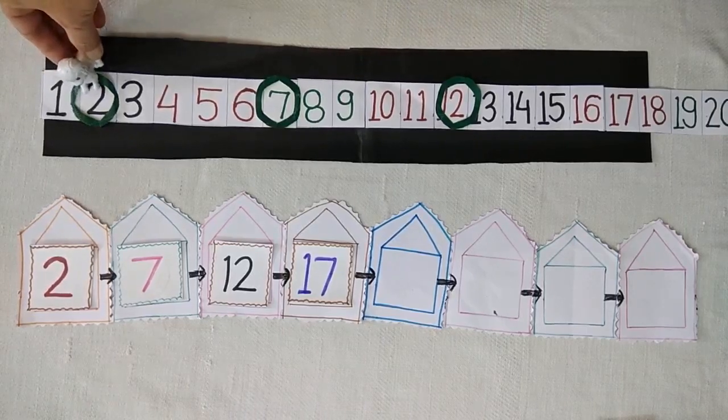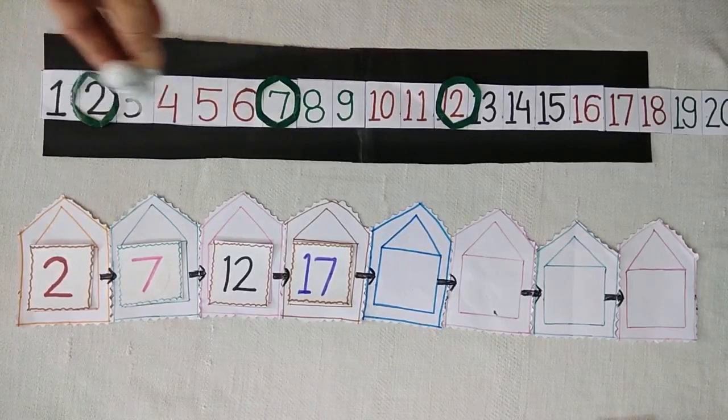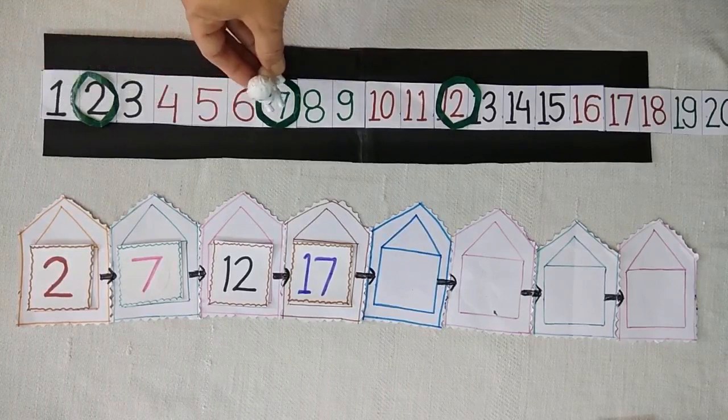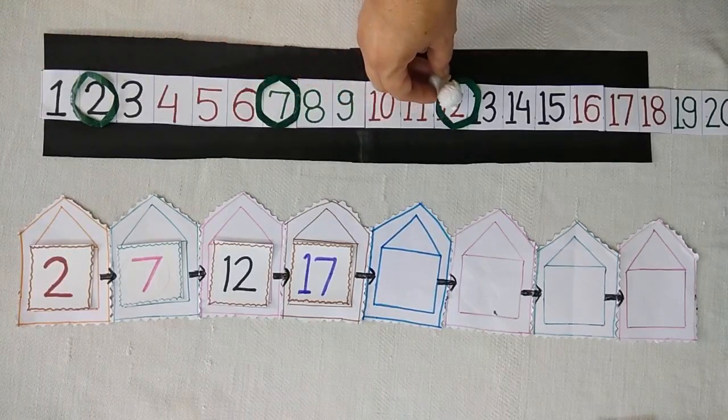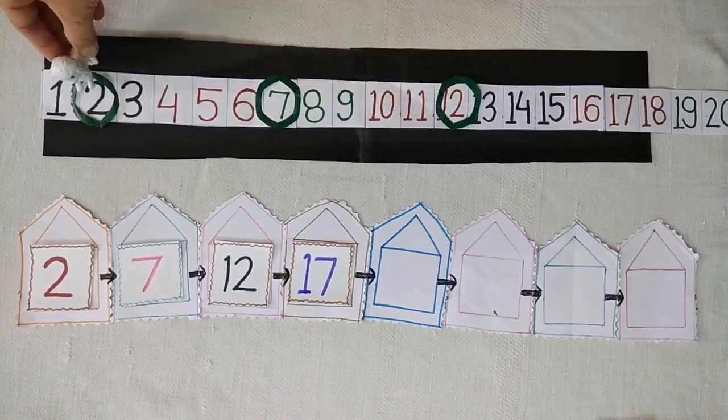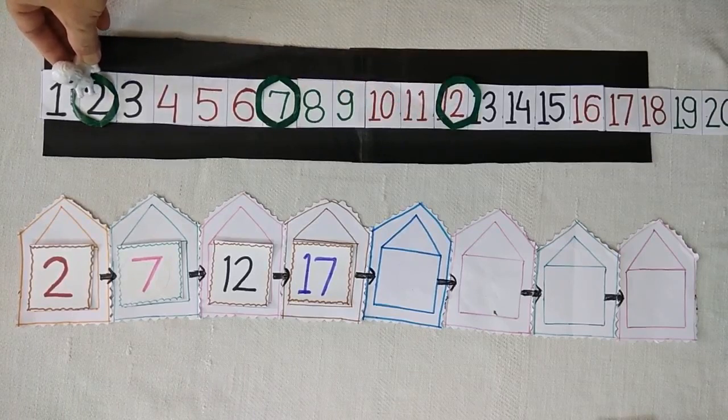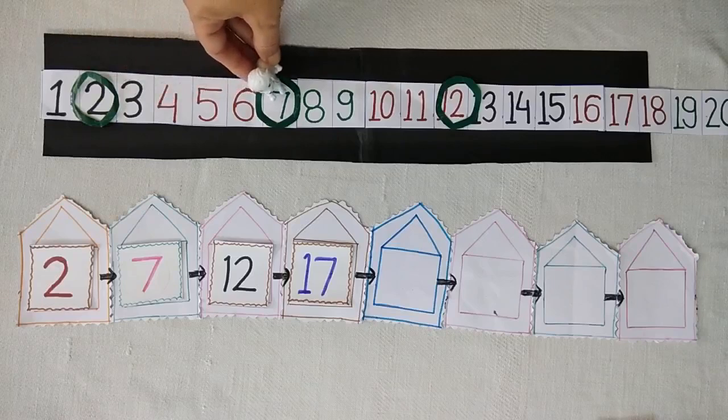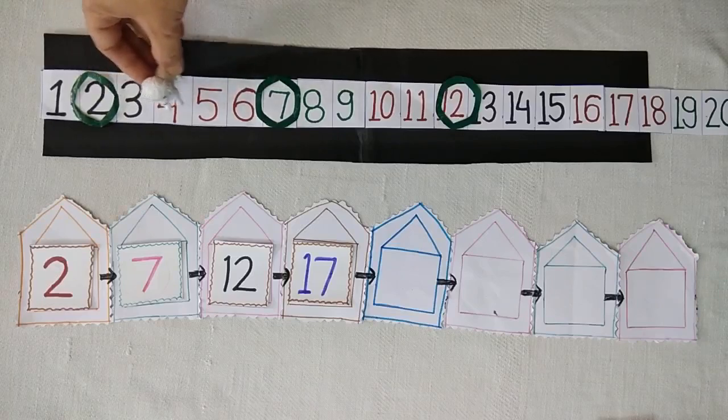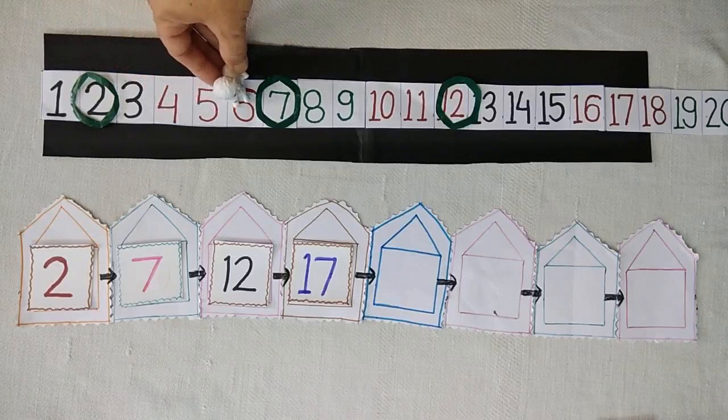It is standing on number 2 and jumps to 7 then 12. Let's see how many numbers does it skip when jumping from 2 to 7. Count with me: 1, 2, 3, 4.